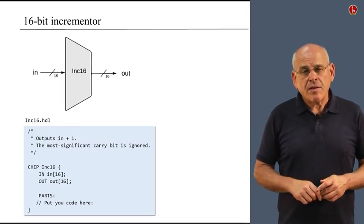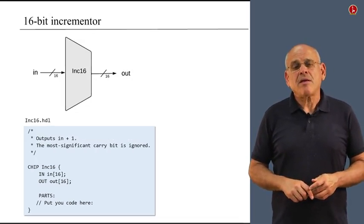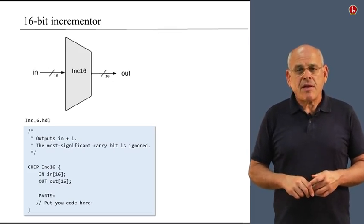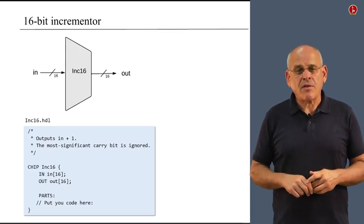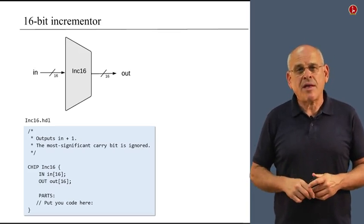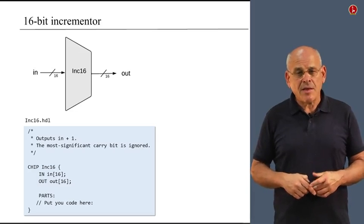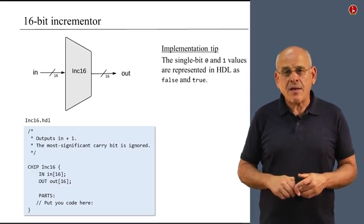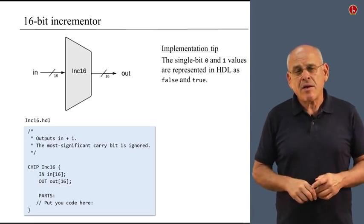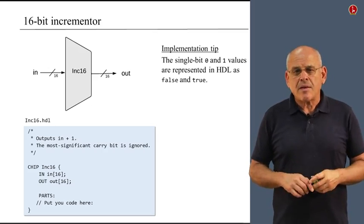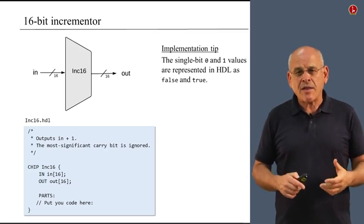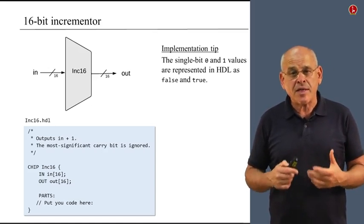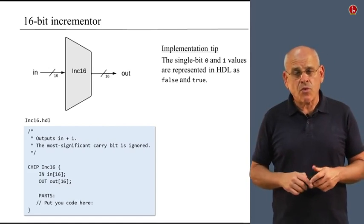The next chip is called incrementer — it's a simple version of an adder. It takes a single input called 'in', adds one to the incoming value, and delivers the result. The stub file is straightforward, and you can build such an incrementer using the chips you've already built. I want to remind you that in HDL you can represent the single-bit values zero and one using the keywords 'false' and 'true' respectively.